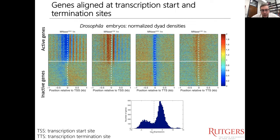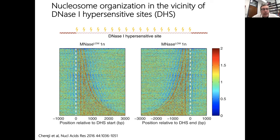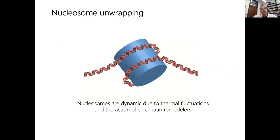Two messages: first, the presumably nucleosome-depleted regions are actually filled with fragile or unstable nucleosomes that you can catch at lower MNase concentrations. Second, there's a big difference in chromatin structure organization between active and inactive genes — you see much more order and self-organization with active genes. You see the same message at DNase hypersensitive sites: lined up by hypersensitive site, you see a depleted region at high MNase that's filled with arrays at low MNase, sorted by the length of the hypersensitive site.